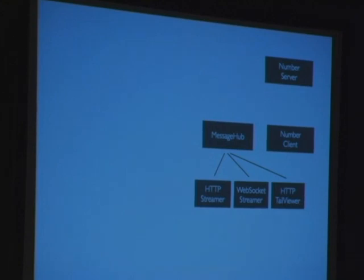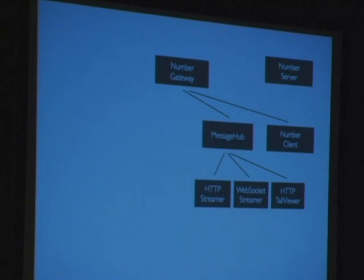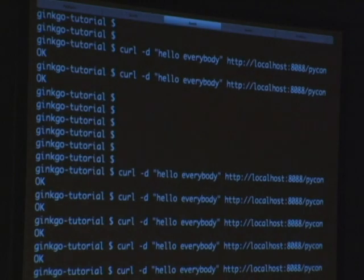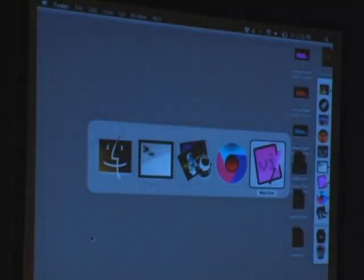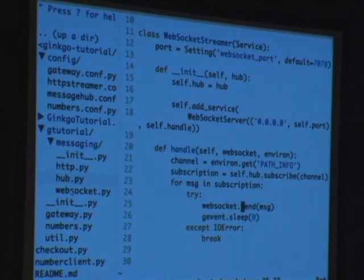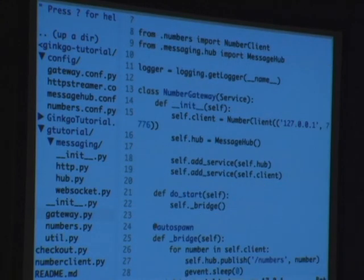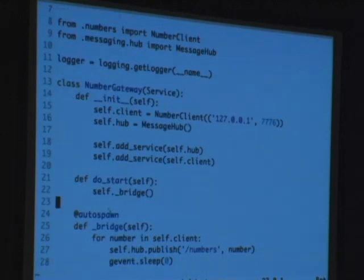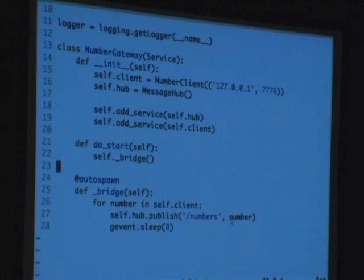So now what we want to do is make a gateway. We've got this cool generic HTTP pub/sub service and we've got this number client thing — let's combine them to make a number gateway. We have a gateway module with a gateway service, and it's pretty simple. All we're doing is creating a new service, creating a message hub and a number client, adding them, and we have a bridge — a greenlet that sits in a loop — and for every number we're going to publish it to the numbers channel.